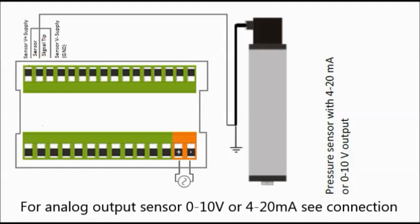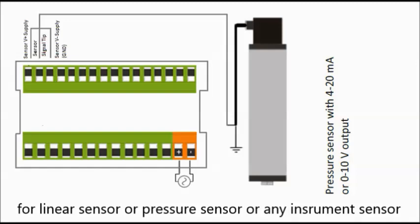For analog output sensor 0 to 10V or 4 to 20mA, you can see the connection for linear sensor or pressure sensor or any instrument sensor.